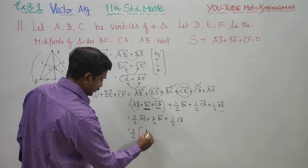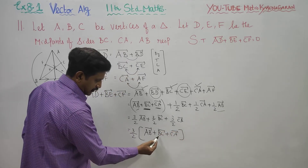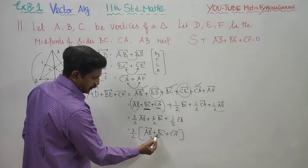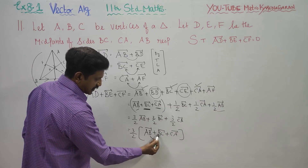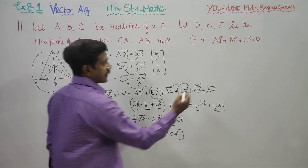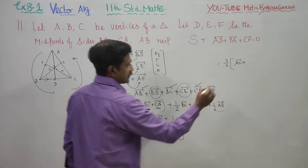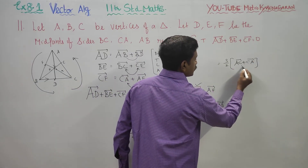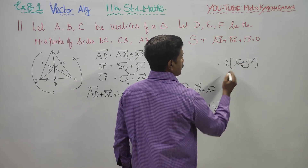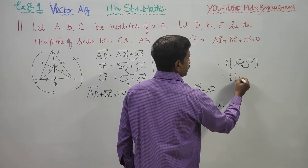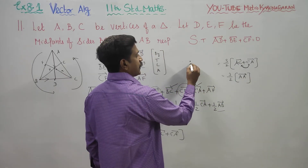The remaining terms: AB plus BC plus CA. Since starting point and ending point merge — AB plus BC gives AC, and AC plus CA gives AA vector, where the starting and ending points are the same.